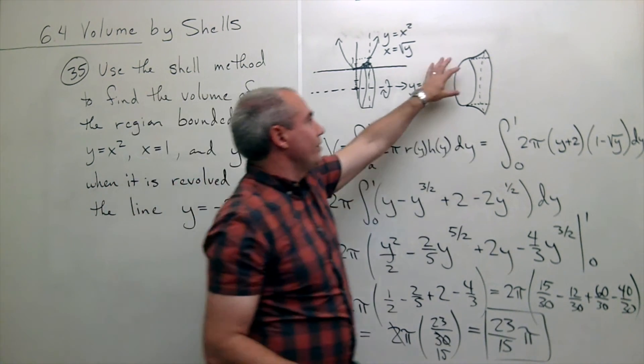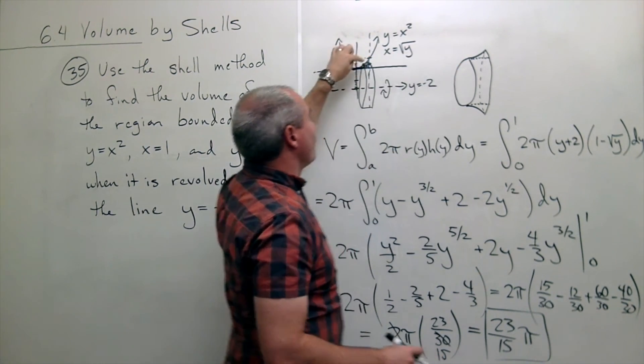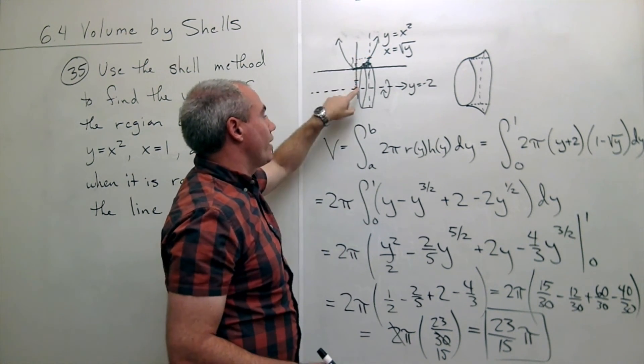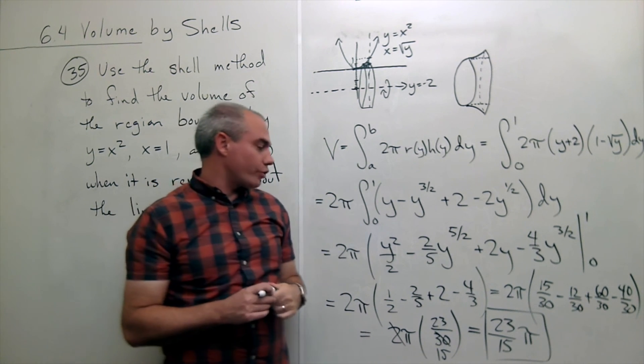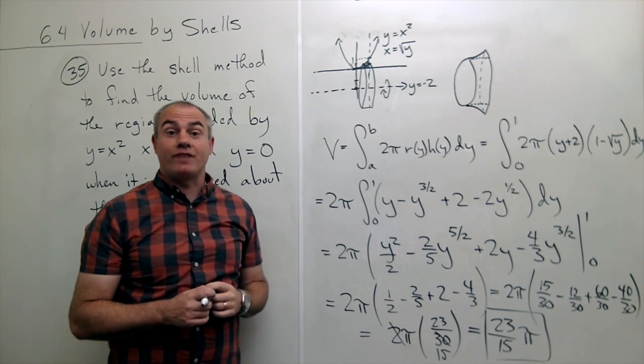And so the volume of this shape that we get when we revolve this little region around the line y equals negative two should be twenty-three pi over fifteen.